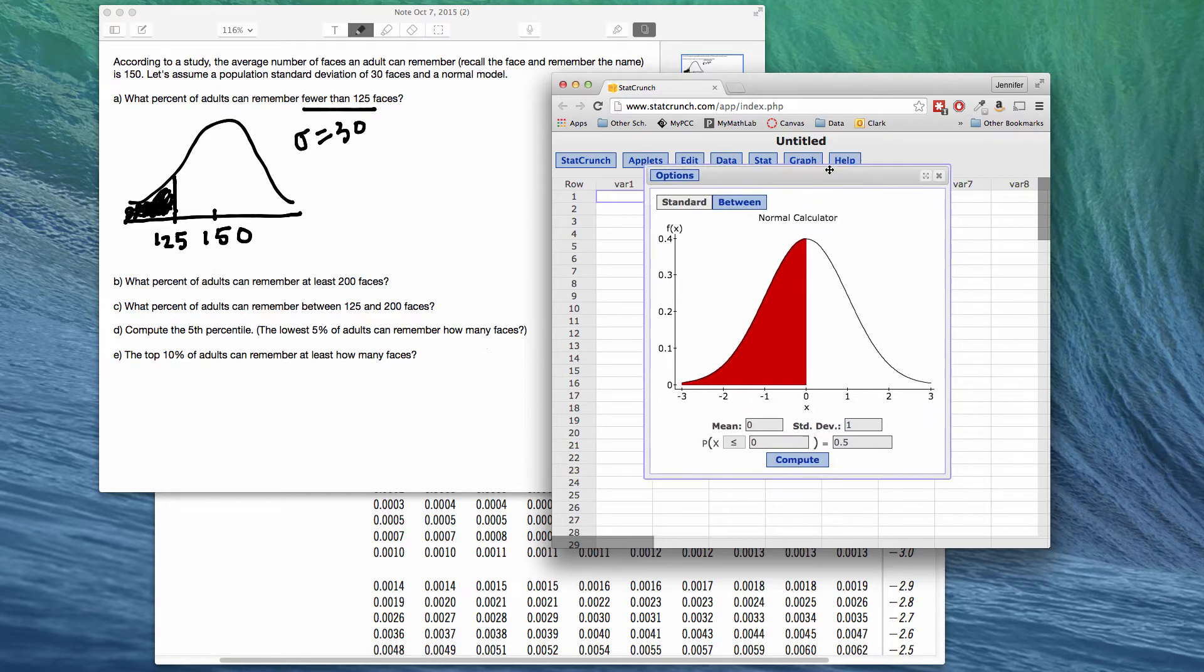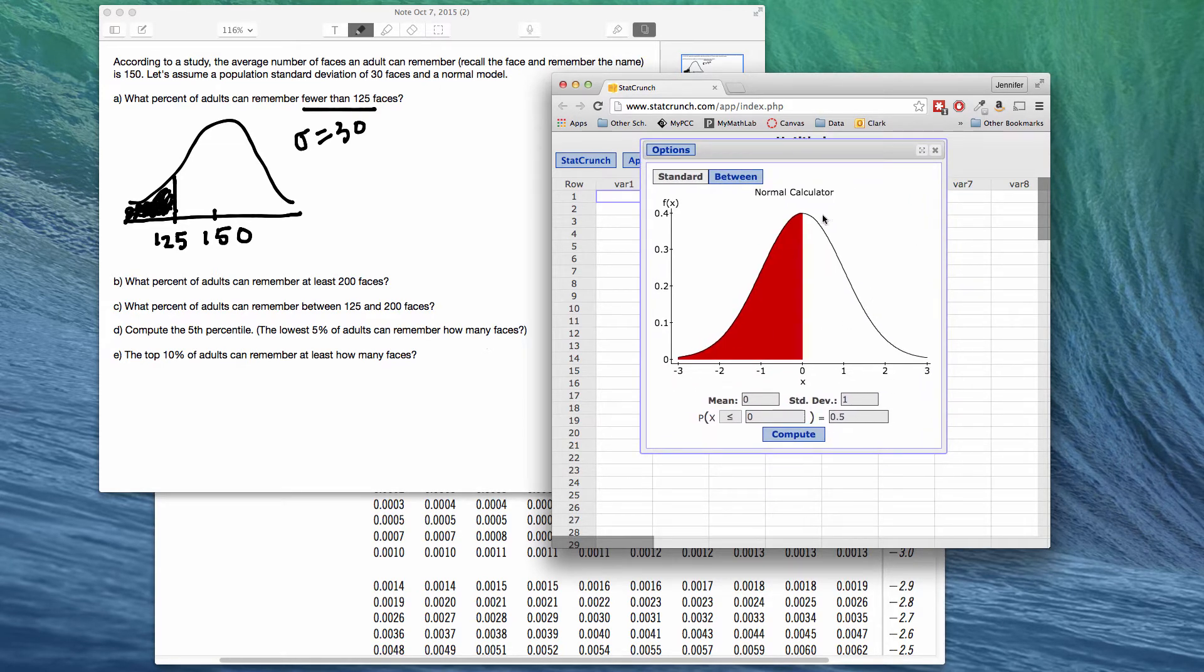It brings up a window and it has this bell curve and then it has places to put in the mean, the standard deviation, where you want to find the probability, what the cutoff will be, and then the probability afterwards. Notice that these yellow boxes come up and they're giving you clues for what to type in here, like mean any number. Standard deviation, it's a number greater than zero. And then fill it in, we'll push compute, and we'll get our answer.